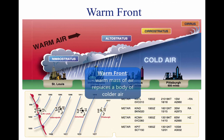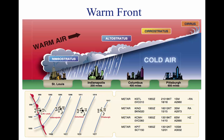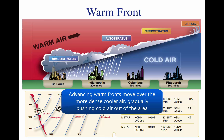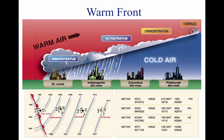A warm front occurs when a warm mass of air advances and replaces a body of colder air. Warm fronts move slowly, typically 10 to 25 miles per hour (MPH). The slope of the advancing front slides over the top of the cooler air and gradually pushes it out of the area. Warm fronts contain warm air that often has very high humidity. As the warm air is lifted, the temperature drops and condensation occurs.